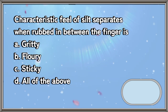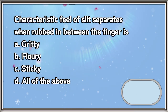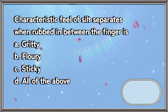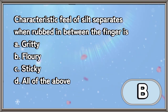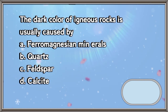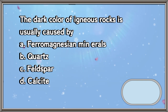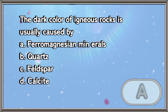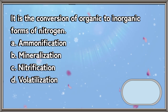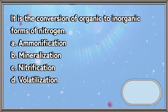The characteristic feel of silt separates when rubbed between the fingers is: a) gritty, b) floury, c) sticky, d) all of the above. The answer is letter B. The dark color of igneous rocks is usually caused by: a) ferromagnesian minerals, b) quartz, c) feldspar, d) calcite. The answer is letter A.